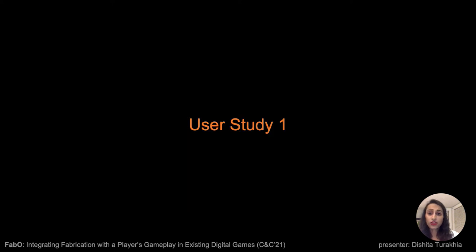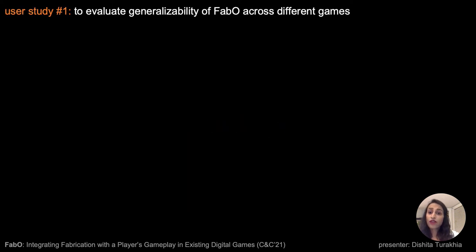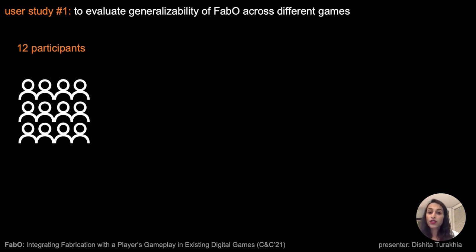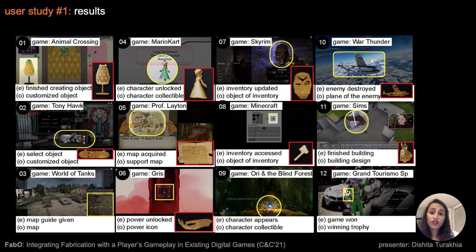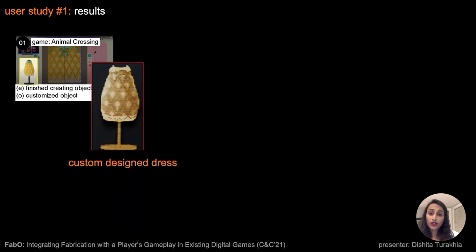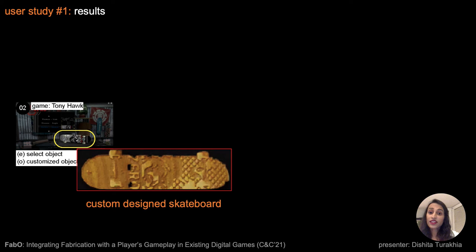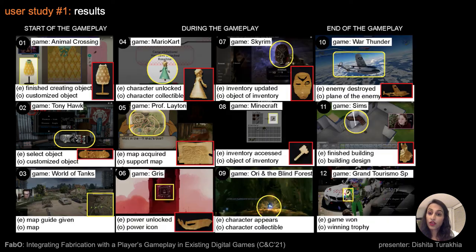We then conducted a user study to evaluate how FABO generalizes for different games. In the study, 12 participants altogether tested 35 games of their choice across several genres, such as action, adventure, etc. They altogether embedded 47 events of fabricating game objects, some of which are shown here — for example, this custom-designed dress from the game Animal Planet and this personalized skateboard from the game Tony Hawk.